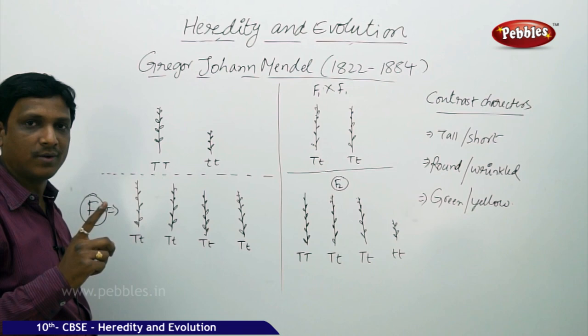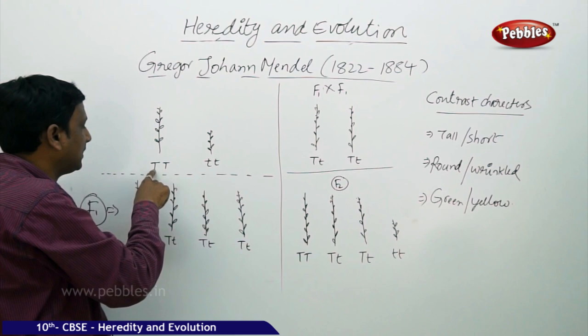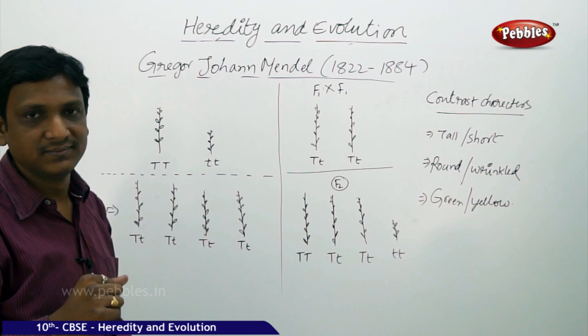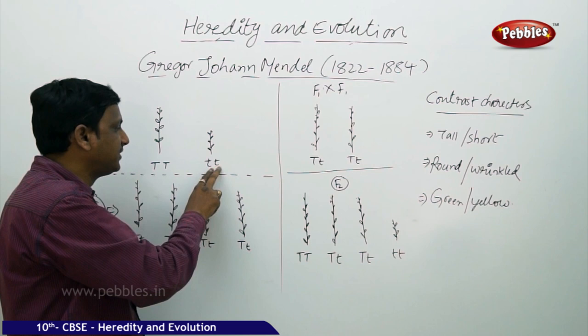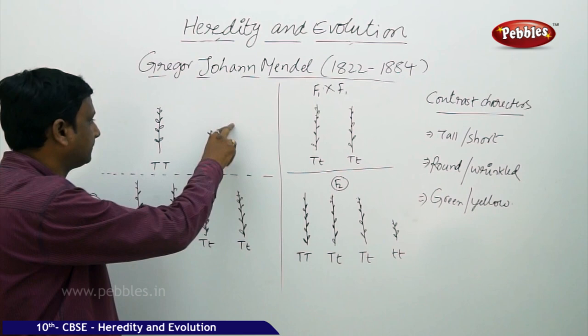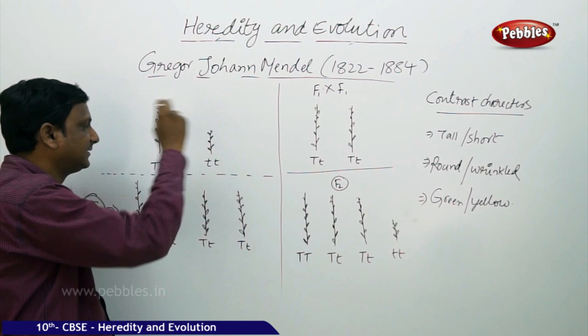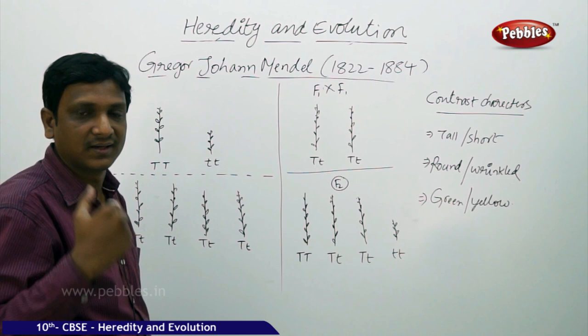One gene is dominant, one is recessive. In the tall plant, both genes express tallness — T, T. Both genes express the same character, tallness. Whereas the short plant has a pair of genes expressed as small t, small t, which is why it is short. When cross-pollination takes place between these two, the seeds obtained from these plants are planted.